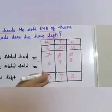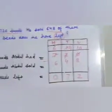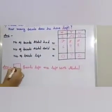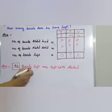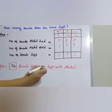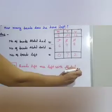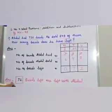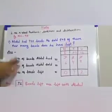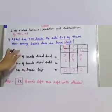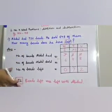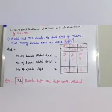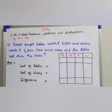Number of beads left is equal to 72. In the answer, we write: 72 beads are left with Abdul. Children, I am reminding you again — in this word problem, statement and answer are both very important and very necessary. Let's see the second sum.